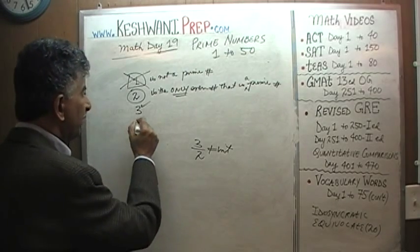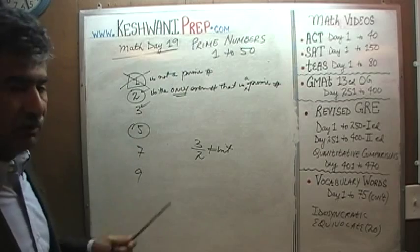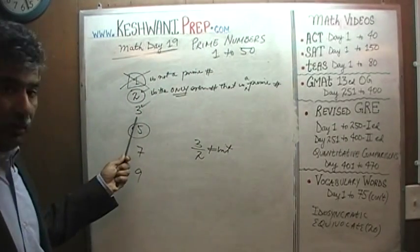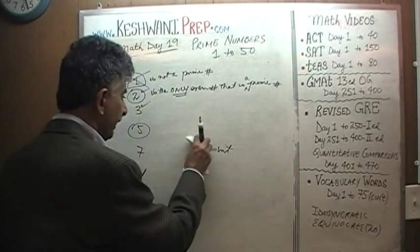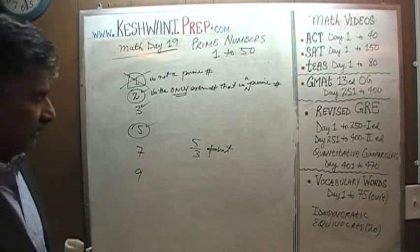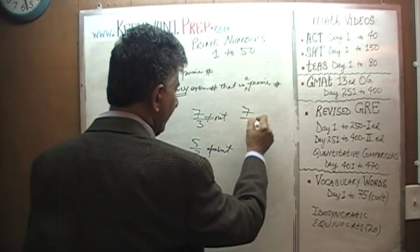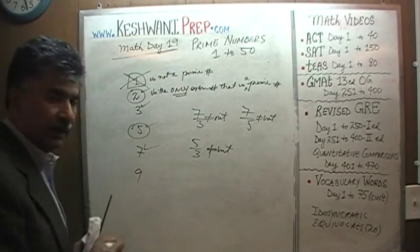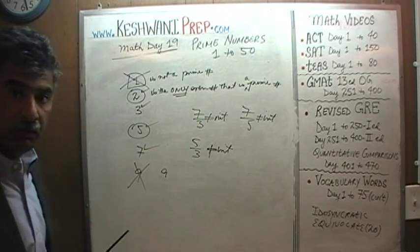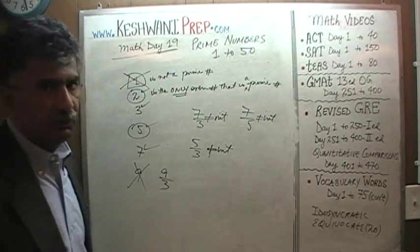Can we divide 5 by any of the previous prime numbers? We are not going to worry about 2 because we are only listing odd numbers. The only other prime number before 5 is 3, and we can't divide 5 by 3 — it's not going to be an integer. Therefore, 5 is also a prime number. 7 is a prime number because 7 cannot be divided by 3 or by 5. What about 9? 9 is not a prime number because we can divide 9 by 3.